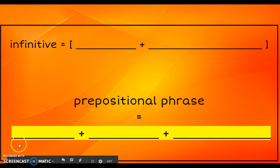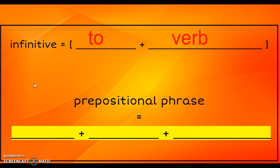So an infinitive is 'to' plus a verb. We think of a verb as something that's a state of being or showing an action. So we're really thinking: after 'to,' we look at the next word in the phrase and we ask, is it something that you can do? And nine times out of ten, that's going to help us recognize if it's a verb.